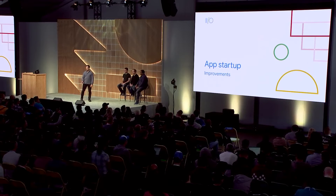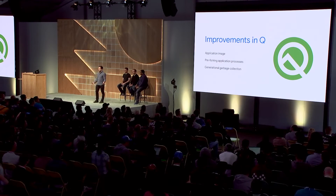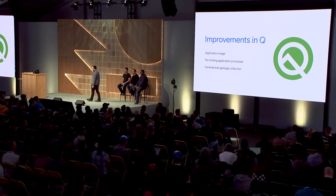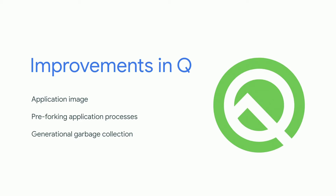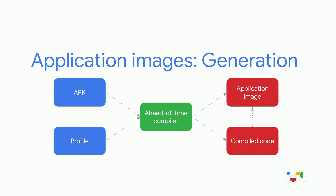Now let's talk about app startup. In Android Q, we have done three major improvements: improved application images originally introduced in Android Nougat, added pre-forking of application processes to accelerate process creation, and added a new generational garbage collector. Application images are serialized heap snapshots containing the classes most commonly used during startup. This optimizes performance by shifting the work of loading those classes from happening during startup to happening ahead of time in the ART ahead-of-time compiler.